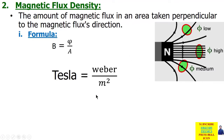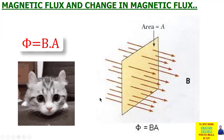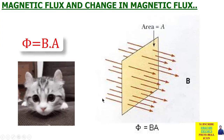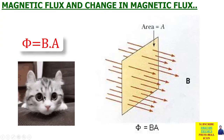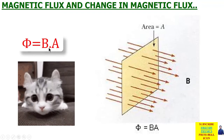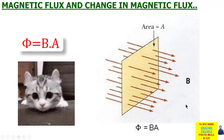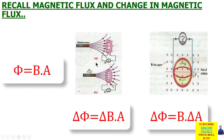یہ دو words میں آپ کا confusion نہیں ہونا چاہیے — magnetic flux ہے φ اور flux density ہے B۔ اکثر numerical میں لکھا ہوتا ہے کہ flux density is — اس کا مطلب یہ نہیں کہ یہ magnetic flux ہے۔ جب word density آئے تو یہ Tesla اور magnetic field consider ہوگا۔ اب آتی ہے بات change in magnetic flux کی — یہ ایک general formula ہے: constant area ہے، constant magnetic field ہے۔